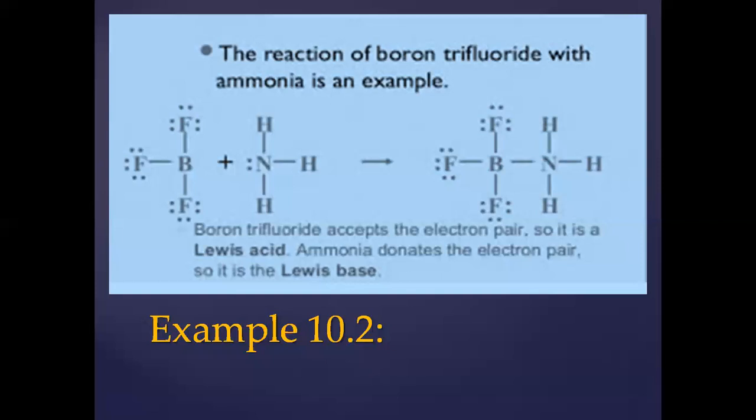BF3 needs an electron pair to complete the octet. Hence, BF3 is an electron pair acceptor and it is called Lewis acid. Ammonia donates the electron pair, so it is the Lewis base. And after the reaction, coordinate covalent bond is formed between BF3 and NH3.